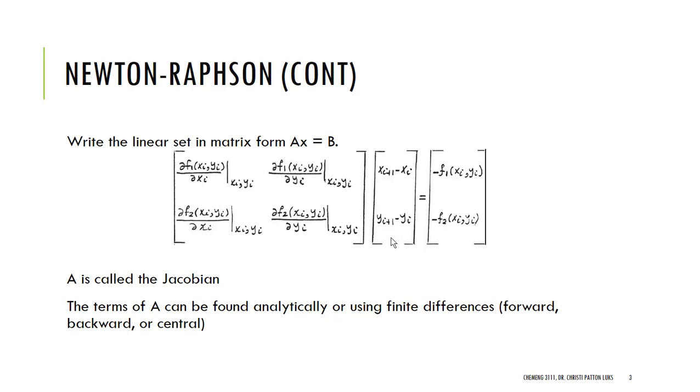My delta x's go here. And then I'm going to have my right-hand sides, my B matrix. And this is going to be actually the negative F1 and negative F2. And this group here is called the Jacobian, and we'll just continue to call this B.